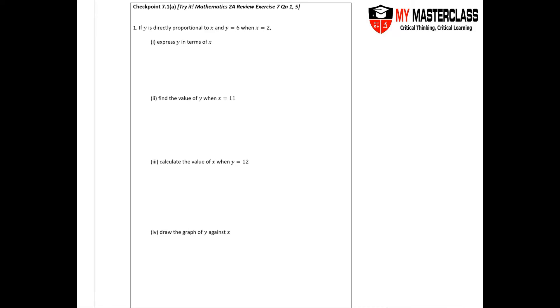In this chapter of direct and indirect proportion, let's take a look at Checkpoint 7.1 part A. Now Y is directly proportional to X, and Y equals 6 when X equals 2. Let's go through how we express Y in terms of X. Direct proportion means Y goes to kX, right? So I'll sub in my value: 6 equals k times 2. You bring over and divide, k goes to 3, so therefore Y goes to 3X.